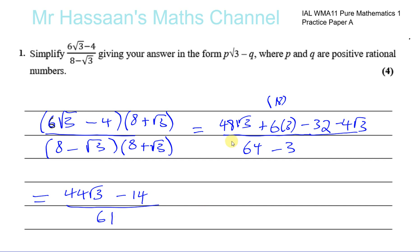So now in the form P√3 minus Q, so we've got to separate into two separate fractions. You have 44 over 61 times √3 minus 14 over 61. And positive rational numbers, P and Q, they're both positive, yes, that's 14 over 61. Now, does any number go into 61? I don't think so. So I think that those are the simplest form. And there we have the answer to question number 1.